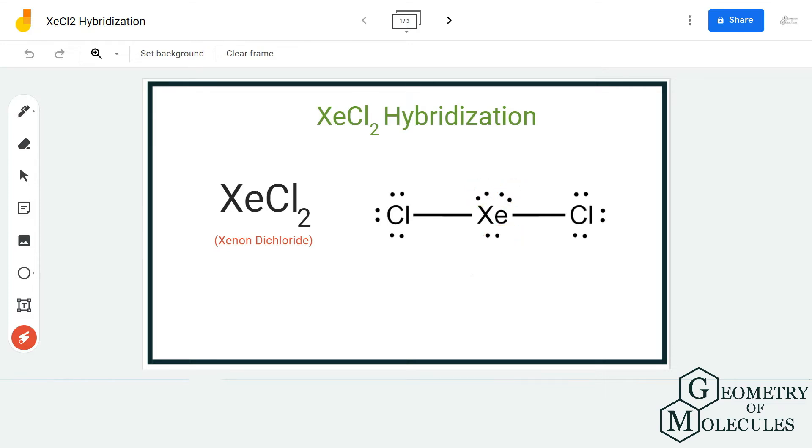To make it really easy and convenient for you to find out the hybridization, we are going to consider the steric number that can help us. The steric number for this molecule would be 5.